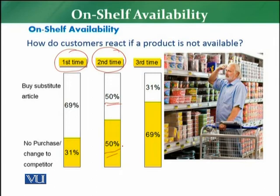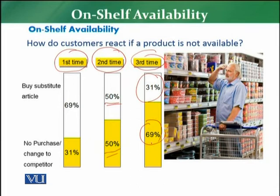The third time, if the customer has visited a particular retail store and still that particular product is not available, there is only a 31 percent chance the customer will buy a substitute article. However, in 69 percent of cases, the customer will not purchase at all or will switch to a competitor.